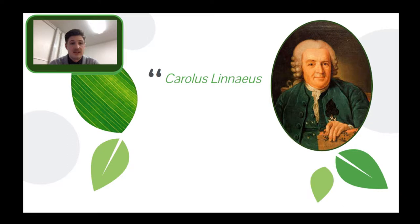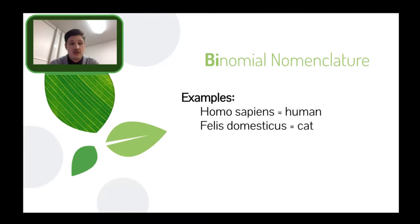But who came up with this idea? How do we name things? Well, it was actually a Swedish botanist who lived from 1707 to 1778, and he invented the binomial nomenclature — the two-word naming system we use today to classify organisms. Carolus Linnaeus was the father of taxonomy.